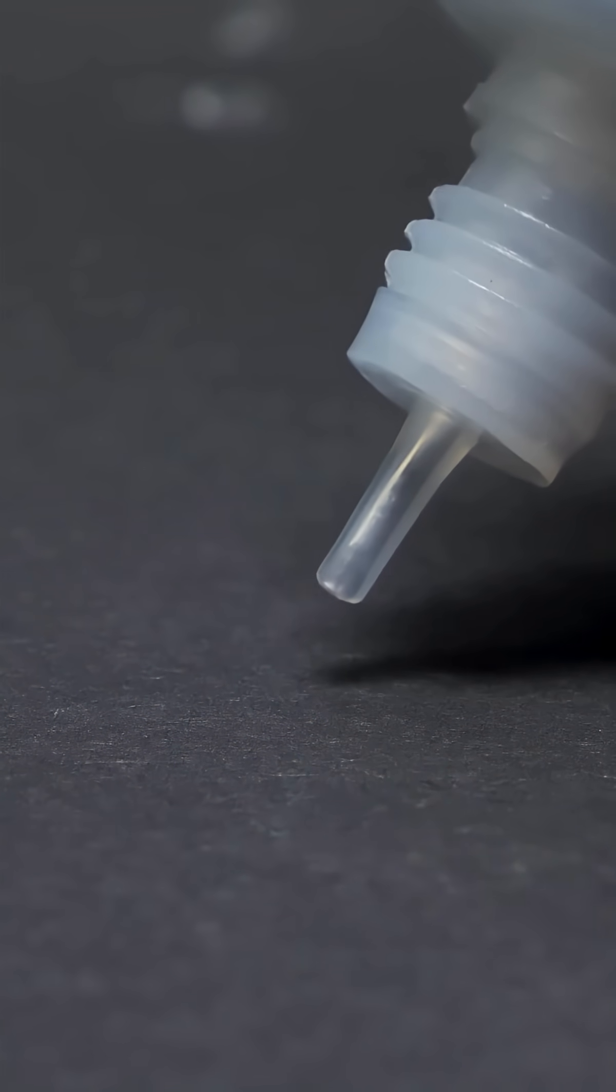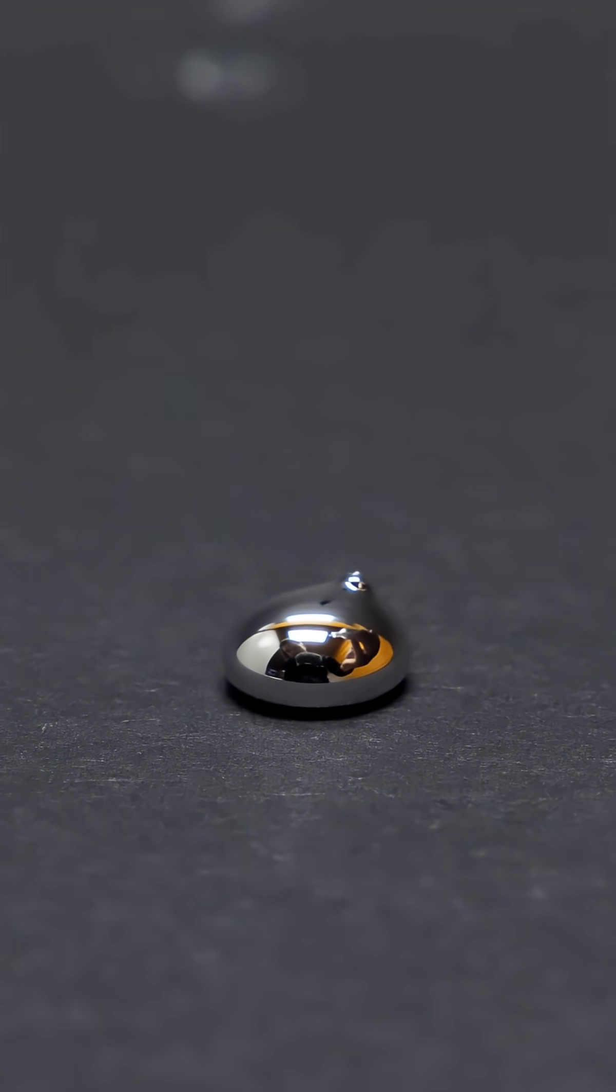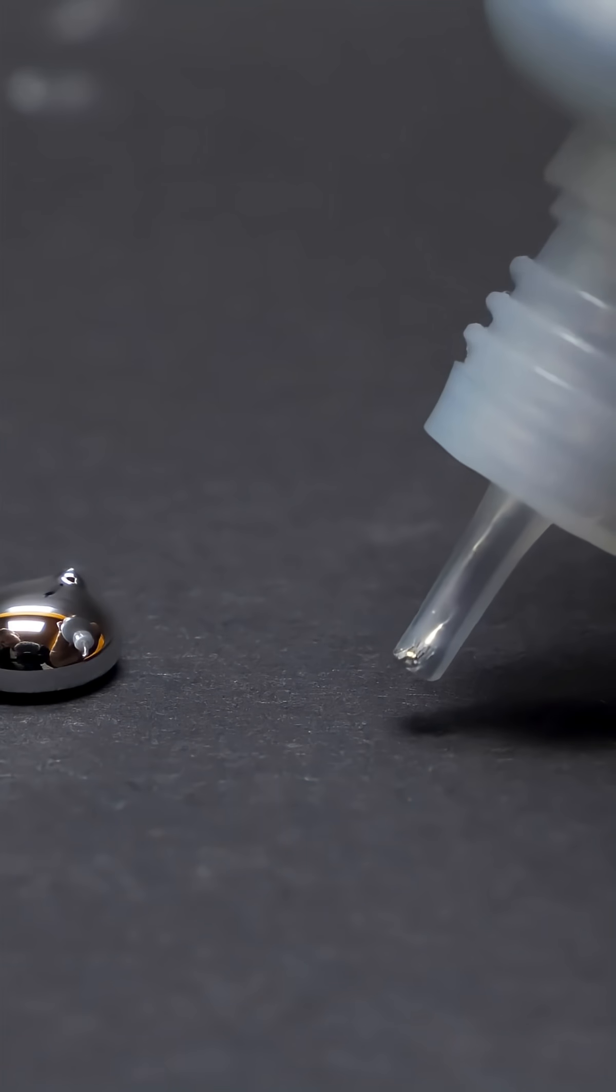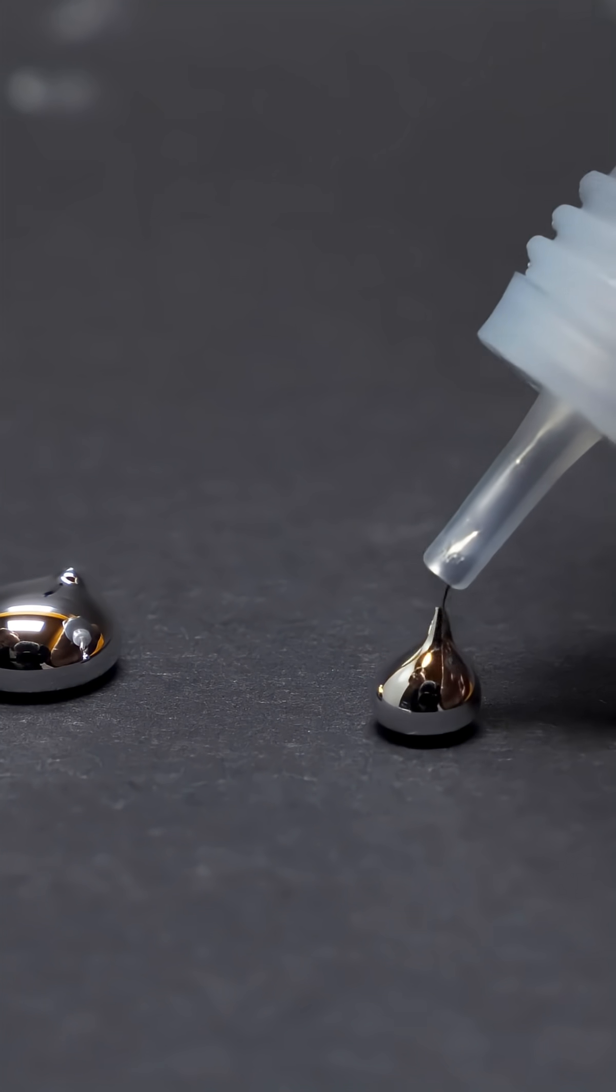Galinstan has an extremely high surface tension. It's ten times greater than that of water. The surface tension does its job effectively, and that's why small droplets of Galinstan are perfectly spherical.